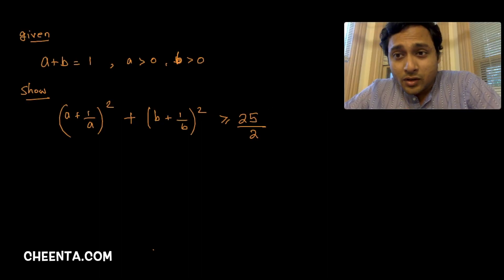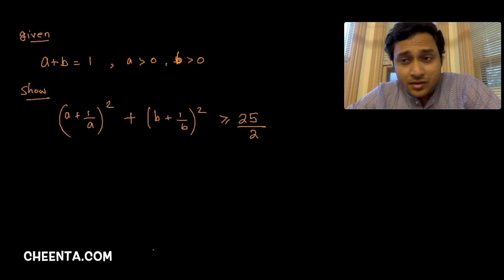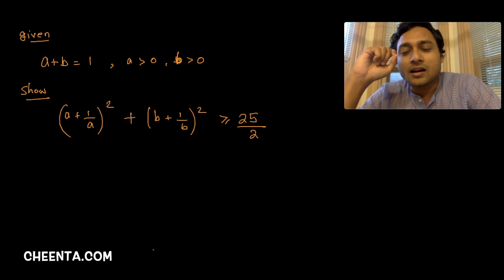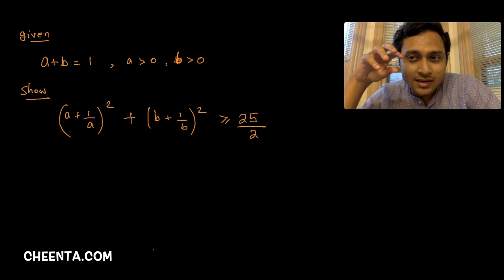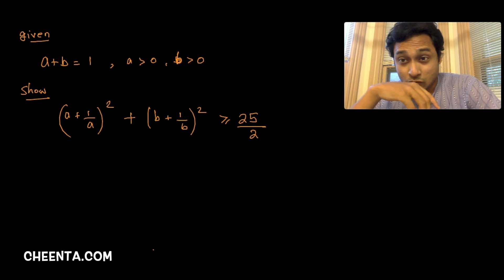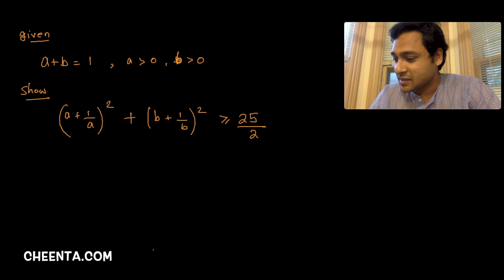This particular inequality problem has appeared in both the ISI entrance and also in some math olympiads across the world. It uses the AM-GM inequality but in a clever manner. There is another condition: a plus b equals 1. We will talk about this, but first let's look at the expression.